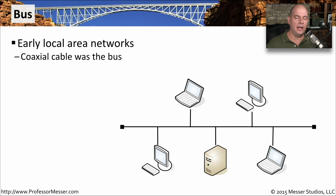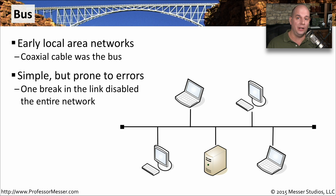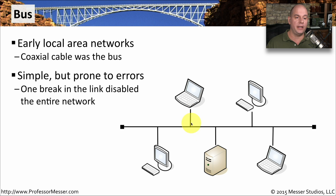An older topology style that you still might run into is a bus topology. This is one where you effectively have a single cable, and everybody is connecting into that cable — a single bus that everybody is using and communicating through. It's a very simple network and easy to install, but it is prone to errors. If you lose one link in the middle, it breaks the connection and half of the network can't see the other half. Also, if one person injects any type of error signals onto this link, it will affect everybody on that bus.